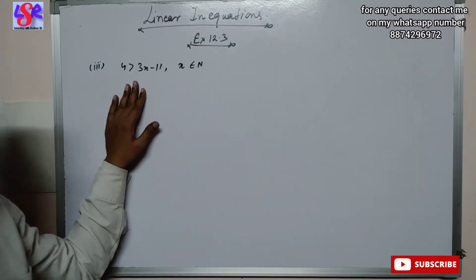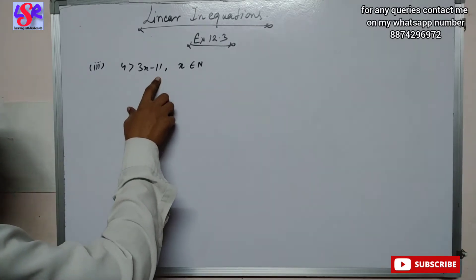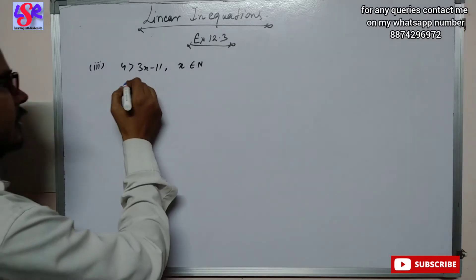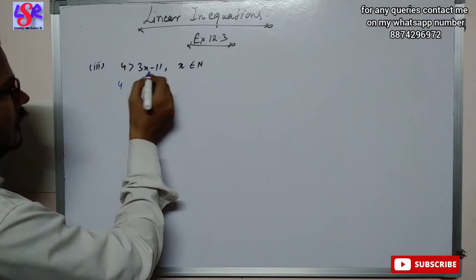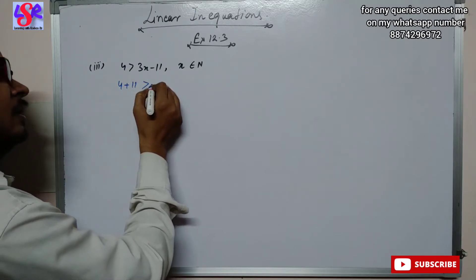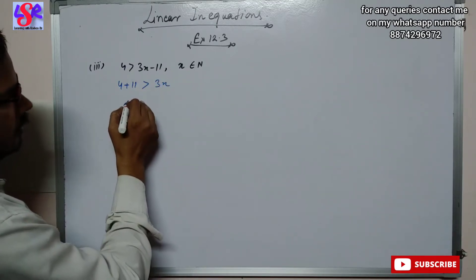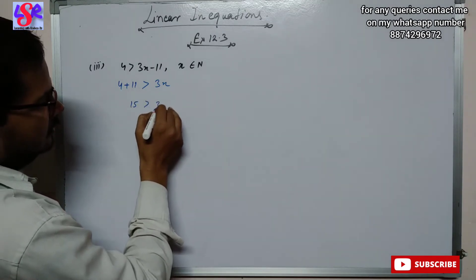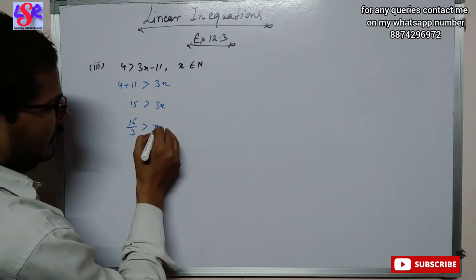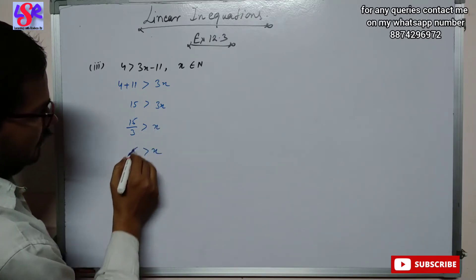Now let us do the third part of the question. Here we have 4 greater than 3x minus 11 where x is the element of natural number. We solve and bring minus 11 to the other side as plus 11, so 4 plus 11 that is 15 is greater than 3x, giving 15 upon 3 greater than x, so x is less than 5.